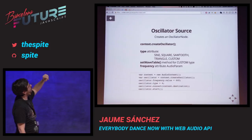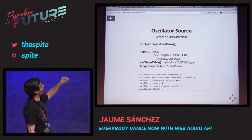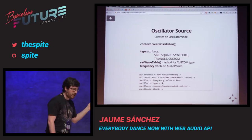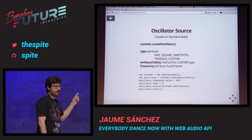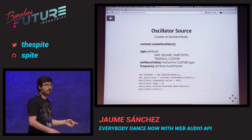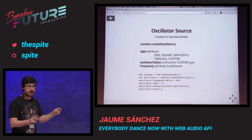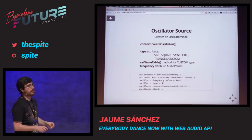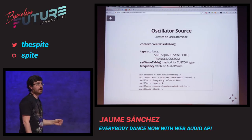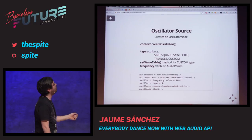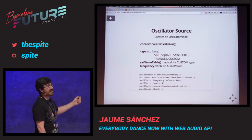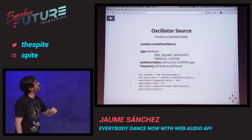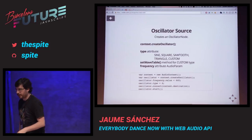Create the audio context, create the oscillator, assign a frequency value and the type. Note that this is one of the things in flux — some APIs accept a string like 'triangle' or 'sawtooth' for the type, while some implementations, I think Safari, require the number. So keep that in mind. Connect the oscillator to the destination and start it.